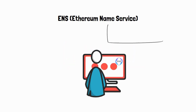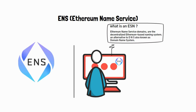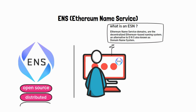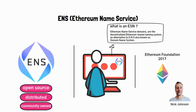So what is ENS? Simply put, ENS, which is also known as Ethereum Name Service domains, are the decentralized Ethereum-based naming system — an alternative to DNS, also known as Domain Name System. ENS is an open-source, distributed, and community-owned naming system that resides in the Ethereum blockchain. It was developed at the Ethereum Foundation in early 2017, proposed and created originally by developers Nick Johnson and Alex Van de Sand.